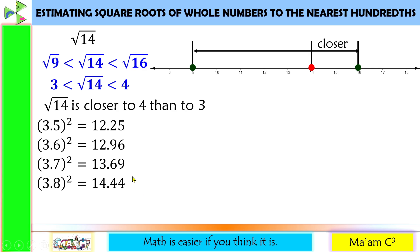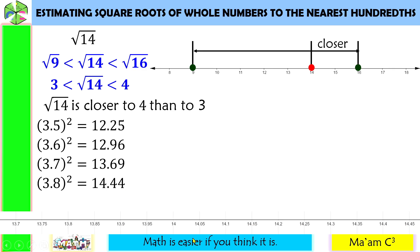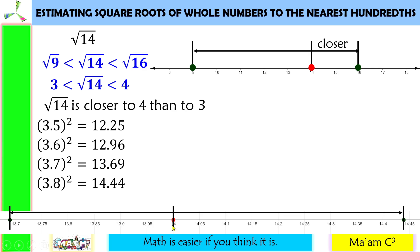I'll repeat the process. I'll plot this on a number line again — plotting 14, then 14.44, and then 13.69. Then I will get the distance of 13.69 and 14.44 from 14. From this graph, you will see that 14 is closer to 13.69 than to 14.44. Since this is closer to 13.69, I am going to square numbers with two decimal places closer to 3.7.